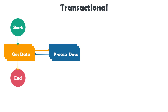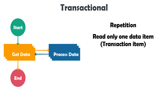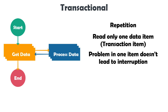The third and last category is the transactional process. We again have get data and process data steps with repetition, but the difference is that we read only one data item and process it, then read the next one and process it. The advantage is that if a problem occurs with one item, the entire process is not interrupted and the next items can still be processed. An example is a process working with a queue: the process gets a queue item, processes it, sets it as successful or exception, then moves to the next. We can also use this without a queue — for example, reading one email at a time from Outlook and processing it. We mostly implement these processes using a state machine.